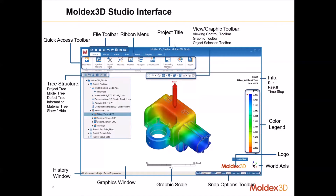The project title is at the top center. Below that are the file toolbar functions, and below that the ribbon menu functions, which include the quick access toolbox. Below that is the tree structure, which helps the user view the process, model, material, and analysis results. Below that is the command window, which shows what processes are currently running. On the right side we can see the graphic scale, the snap option toolbar, and above that the world axis toolbar and Moldex 3D logo.